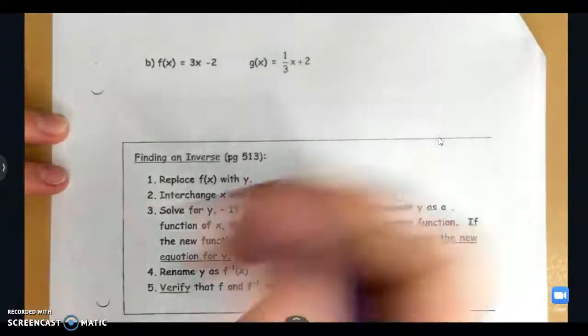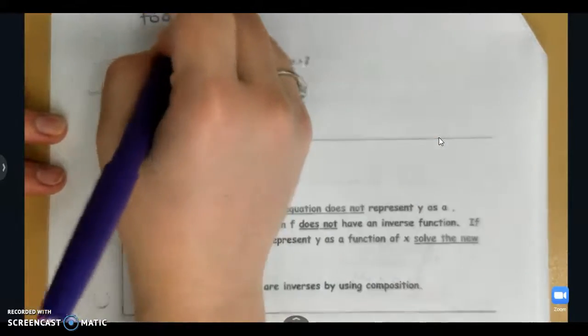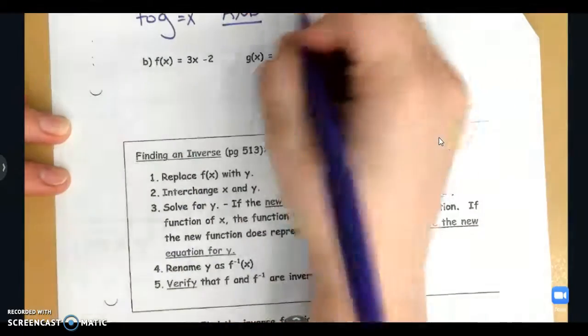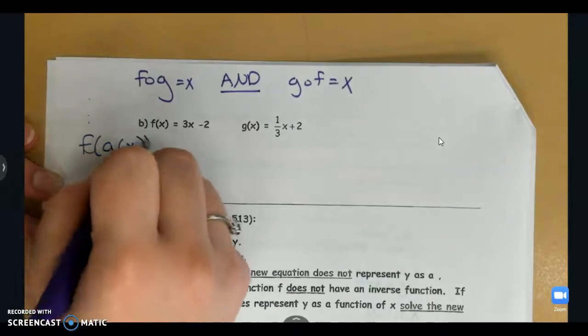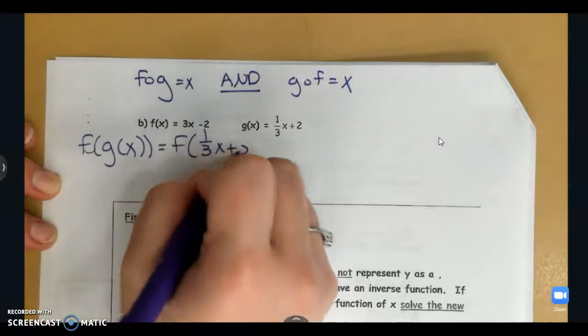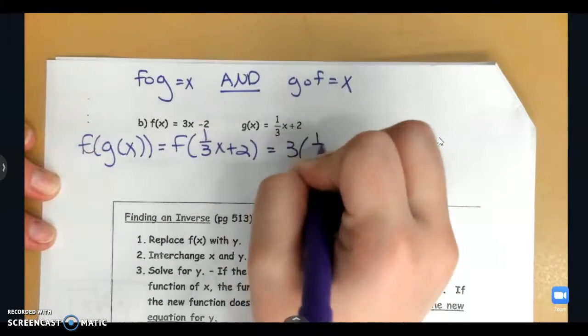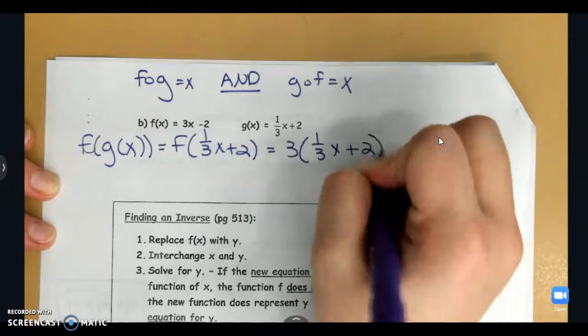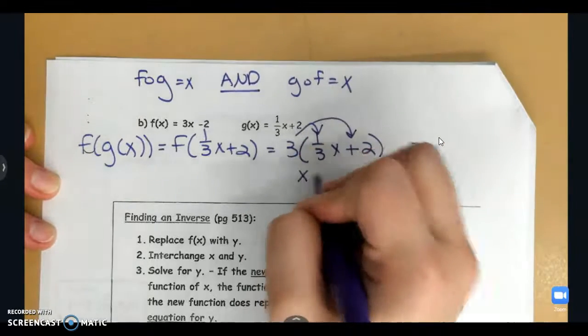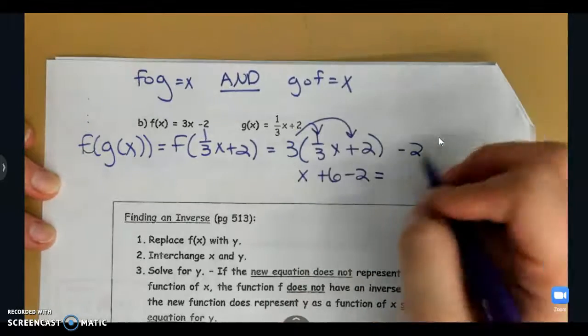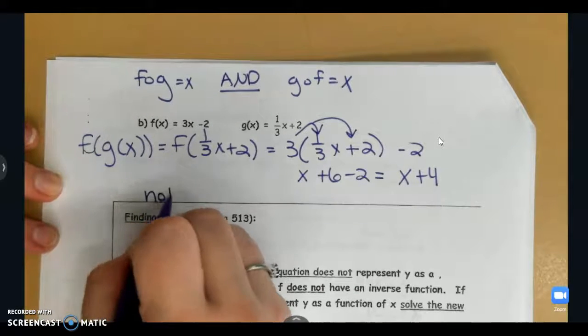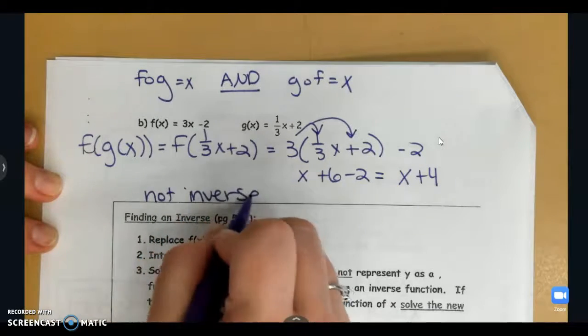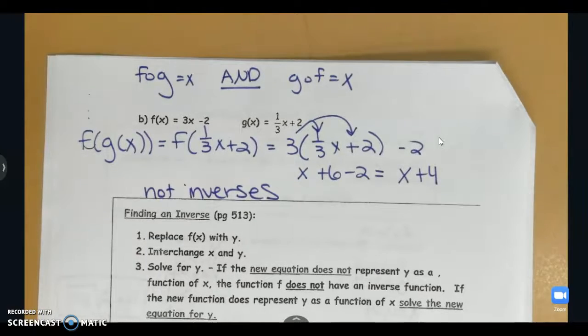Let's practice that again. Here I have two more functions f and g. Remember I need to show that f of g equals x and g of f equals x. First, f of g. We're going to plug in 1 third x plus 2. When I distribute that 3, I get x plus 6, and then when I add my constants I end up with x plus 4. And this does not equal x, so f and g are not inverses because I did not get just x by itself as a result.